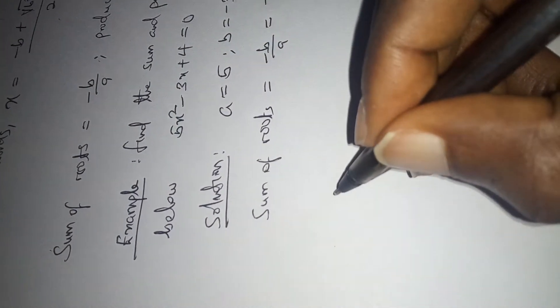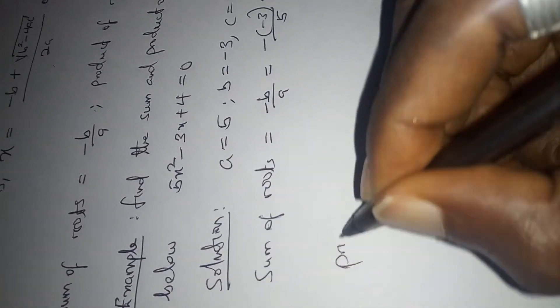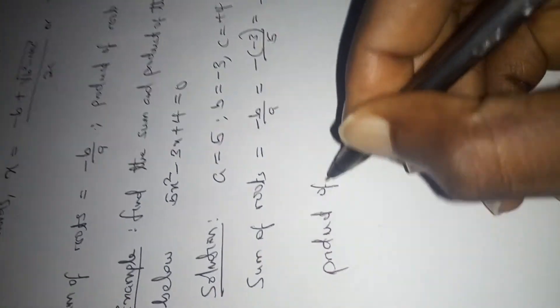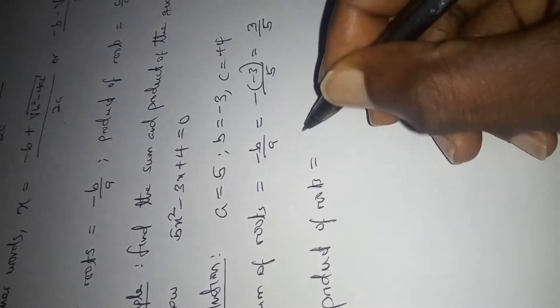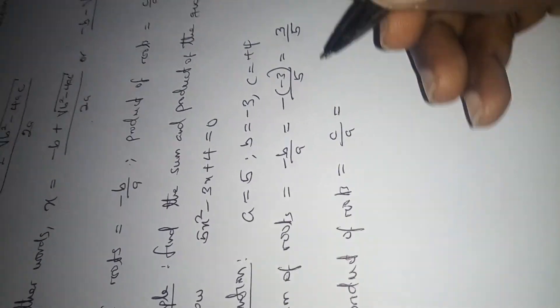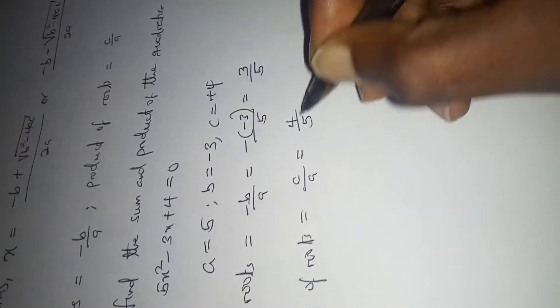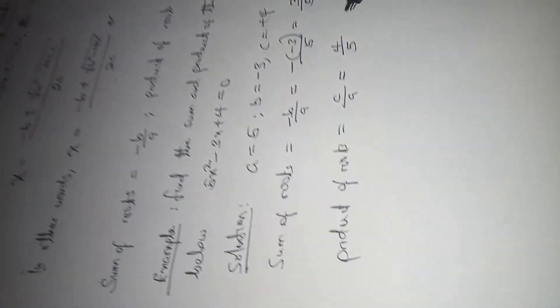So the next thing now is the product of roots. Product of roots equals C over A, which equals 4 over 5. So this is the sum, this is the product.